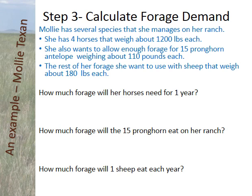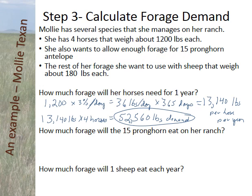Now we calculate the forage demand — how much the animals need. Molly has several species on the ranch she wants to maintain. She has four horses that weigh about 1,200 pounds. Each horse is a non-ruminant and a hindgut fermenter, so they eat about 3% of their body weight per day — about 36 pounds per day. They're on the ranch all year, 365 days, for a total of 13,140 pounds per horse per year. With four horses, that comes to 52,560 pounds.